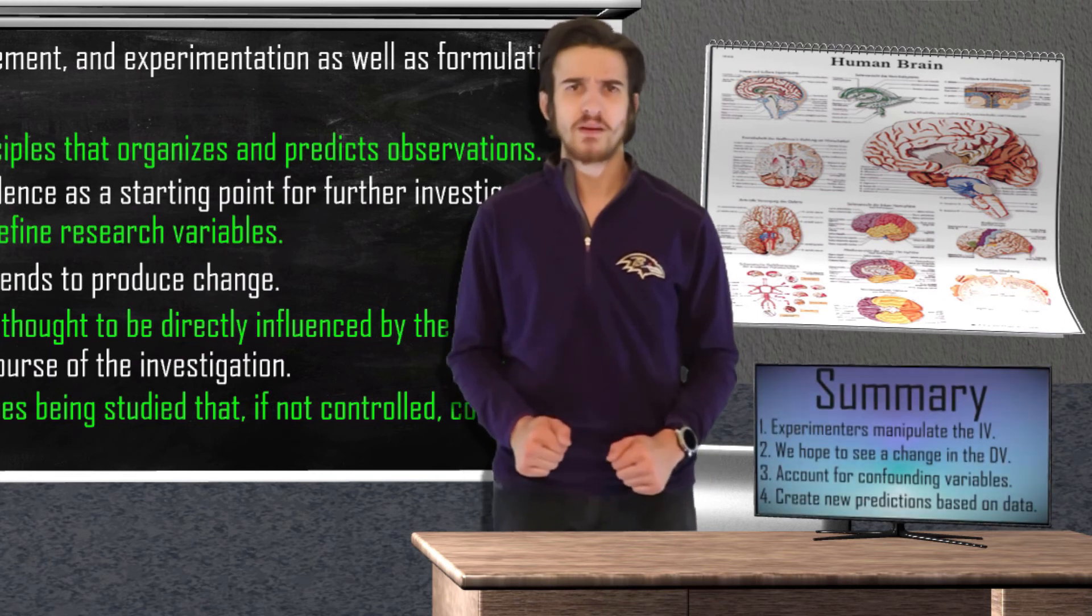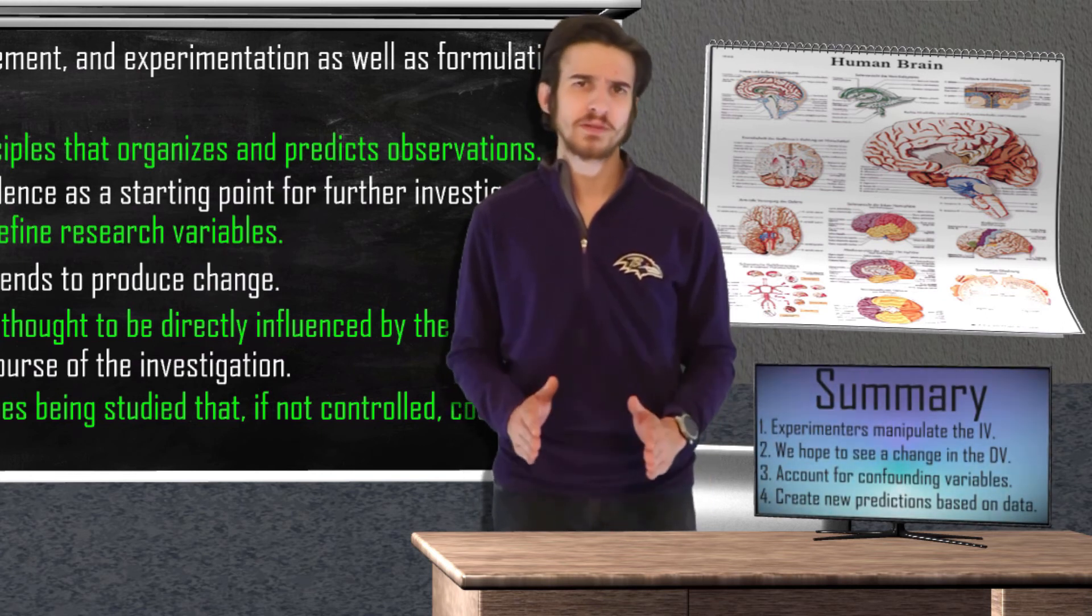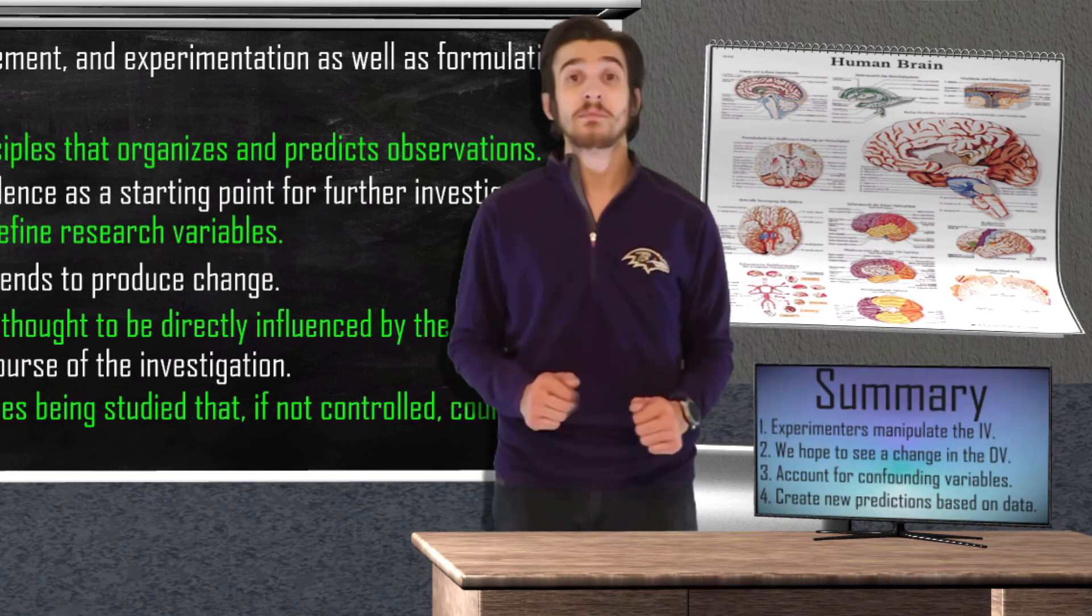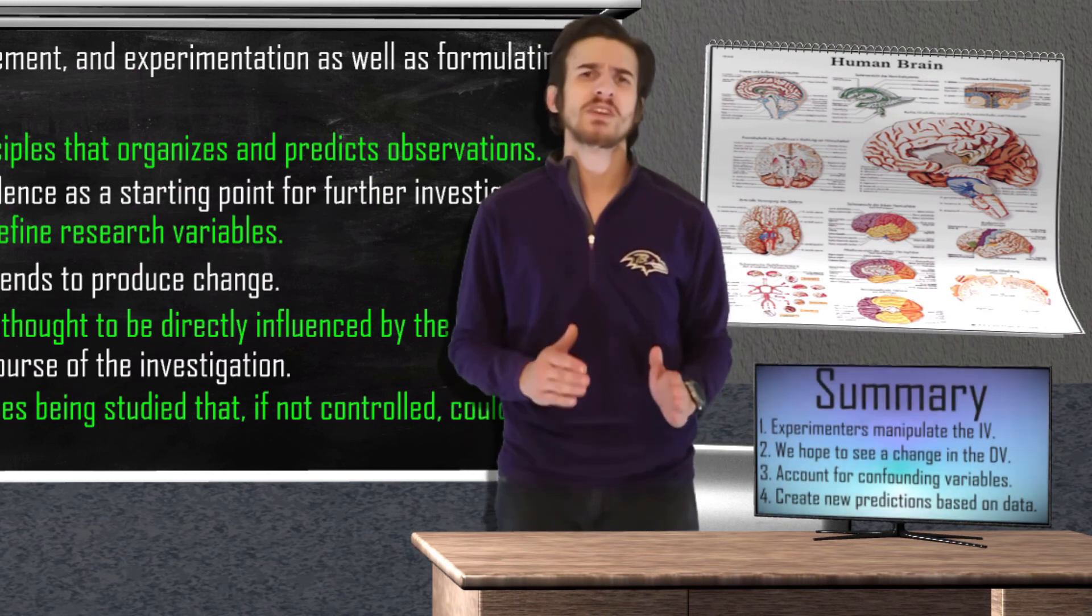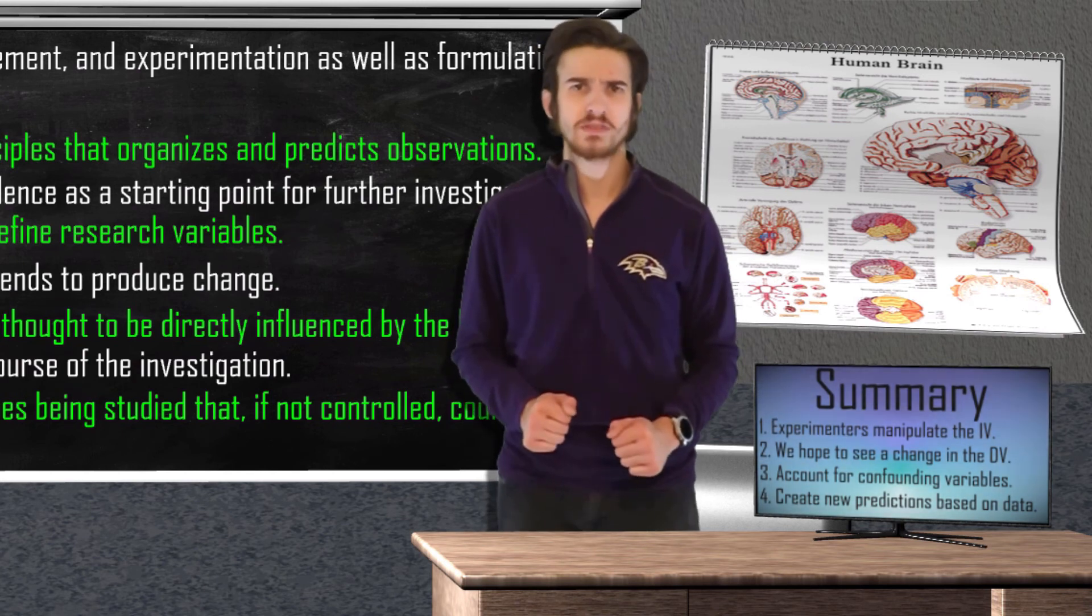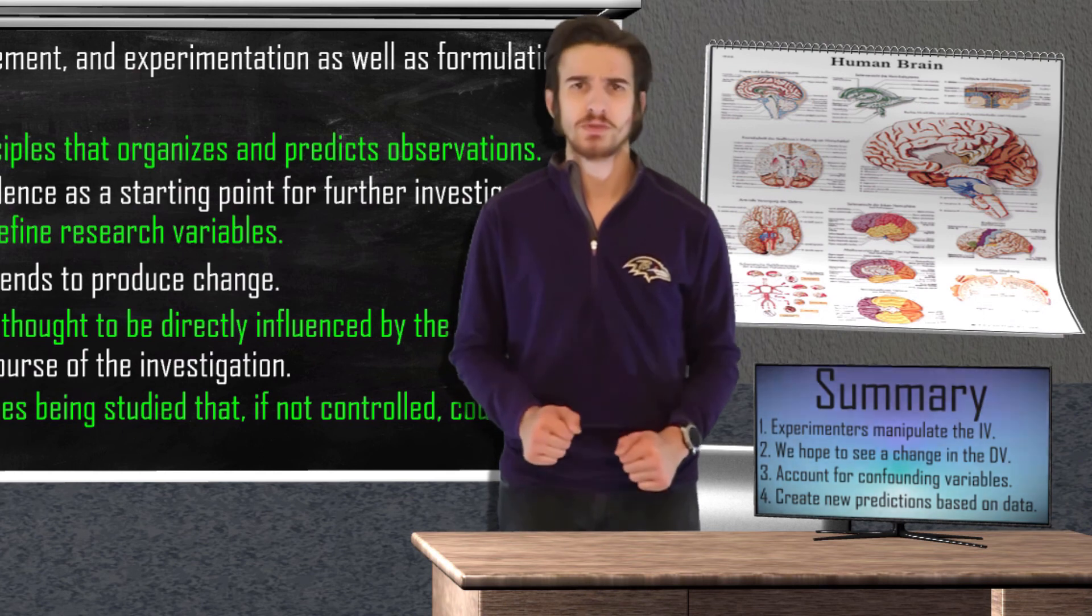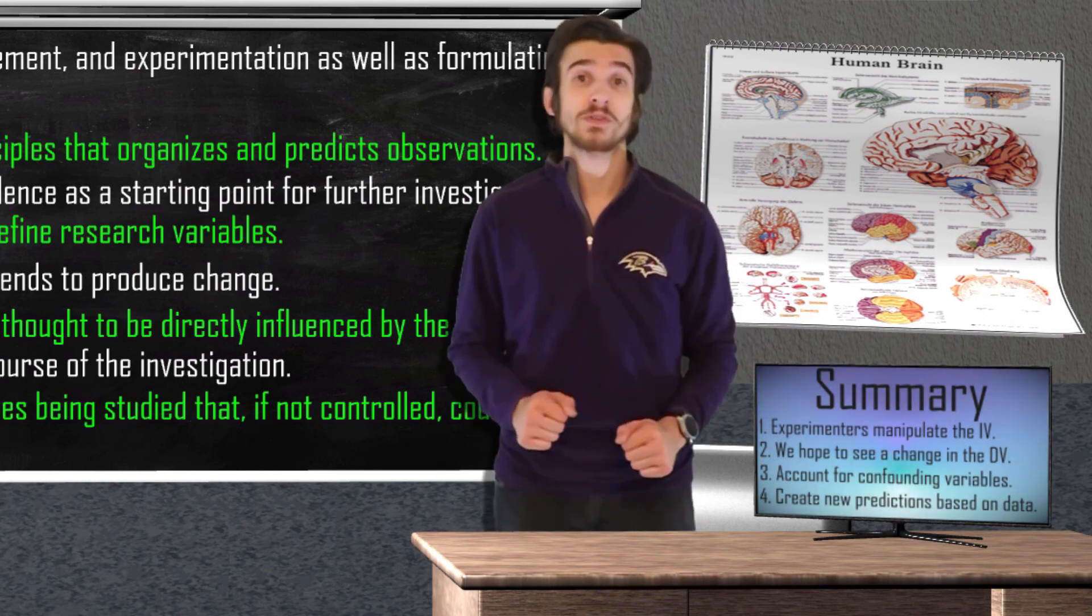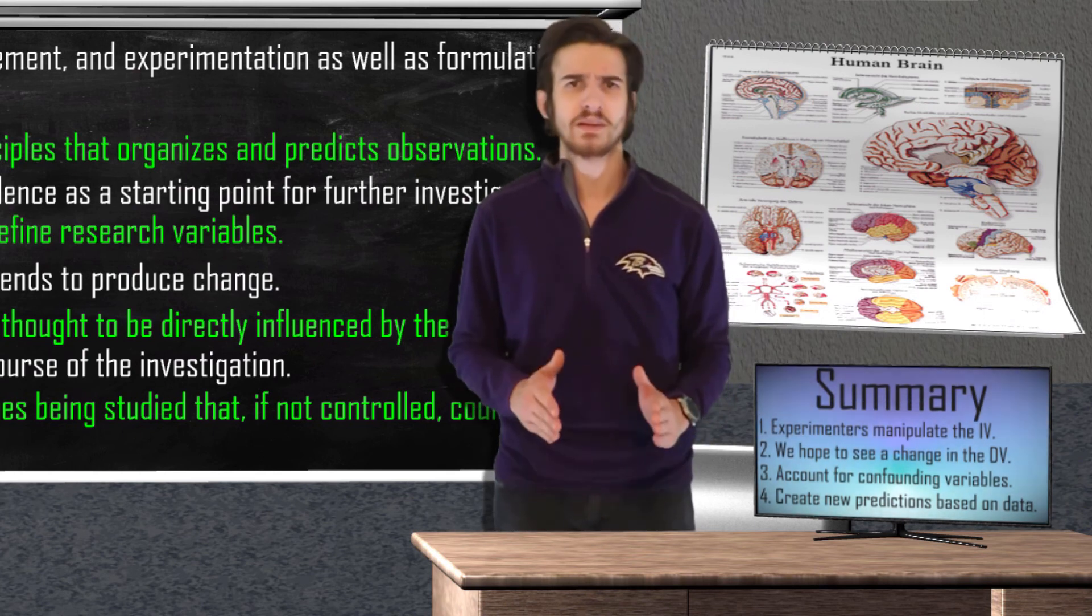In summary, the independent variable is the variable that we as experimenters can manipulate. We are hoping that the manipulation of this variable causes a direct change in our dependent variable, proving our proposed hypothesis correct. We want to make sure we are accounting for any confounding variables that could affect the results of our experiment. We do this in order to keep the results of our experiment as valid as possible.